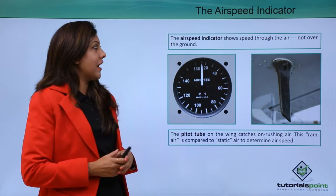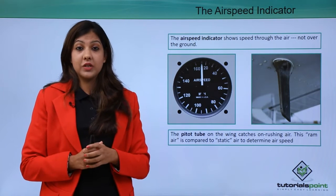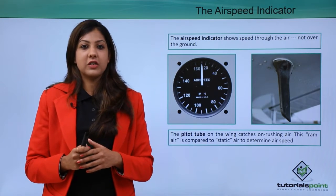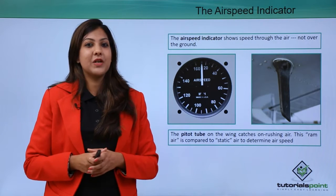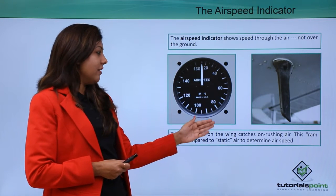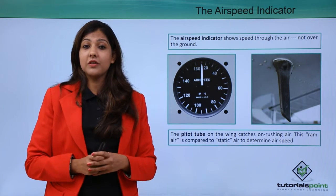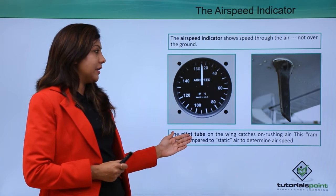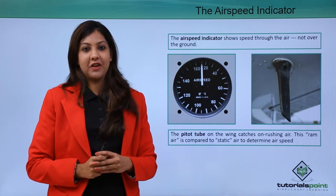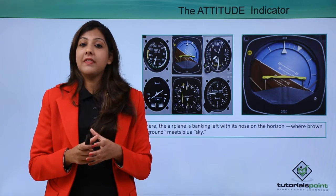The airspeed indicator shows the speed of the aircraft in the air. The pitot tube on the wing catches the rushing air — this ram air is compared to static air to determine the airspeed. This is used by pilots worldwide, as the pitot tube on the wing helps determine airspeed during the airborne phase of flight.